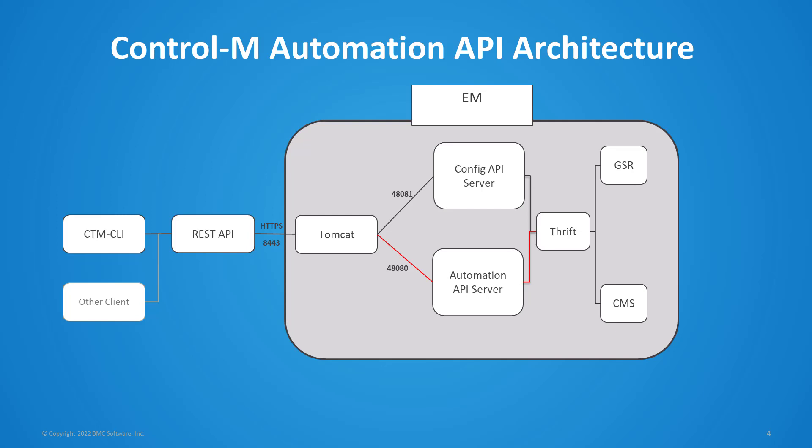Here we have the architecture for Control-M Automation API 9.20. The API is part of the Control-M Enterprise Manager server. Any client CLI or REST API will connect to Tomcat on the default port 8443, and depending on the type of request it will be redirected to the API server on internal port 48080 by default, or the config API server on internal port 48081 by default. For example, sessions, build, deploy, and run requests are redirected to the API server, and config requests are redirected to the config API server. The API server then communicates with the GSR and the CMS accordingly using Thrift.